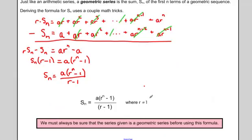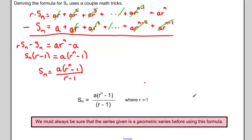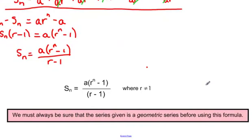One restriction to note: r cannot equal 1, because that would make the denominator zero, giving an undefined answer. The only case where r equals 1 is a series of the exact same number repeated. Also be careful to confirm you have a geometric series before using this formula — if it's arithmetic, use the arithmetic series formula from the previous lesson.